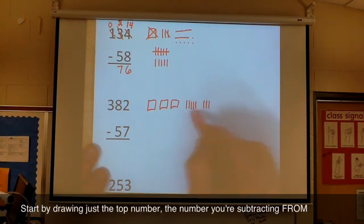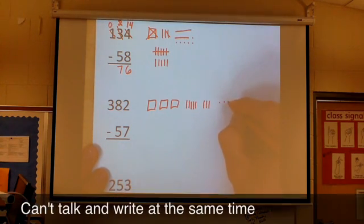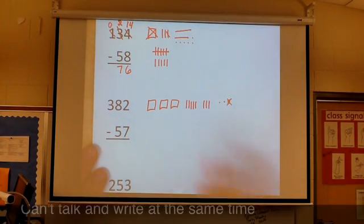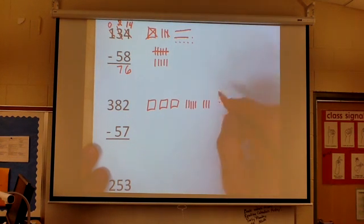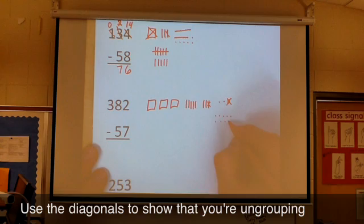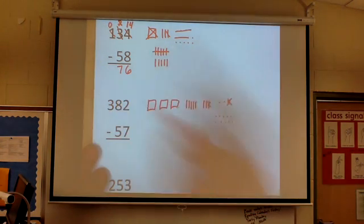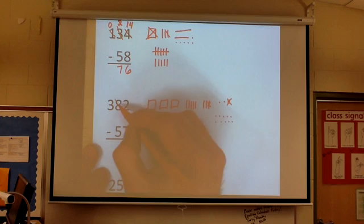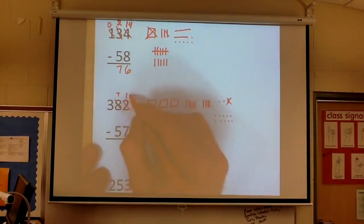Again, keeping them organized in groups of 5 really makes things easier here. So taking away 57. Do I have 7 ones? No. I'm going to trade in one of these. Trading in my ten for ten ones. So I used to have 8 tens, now I've got 7 of them. I used to have 2 ones, now I've got 12.